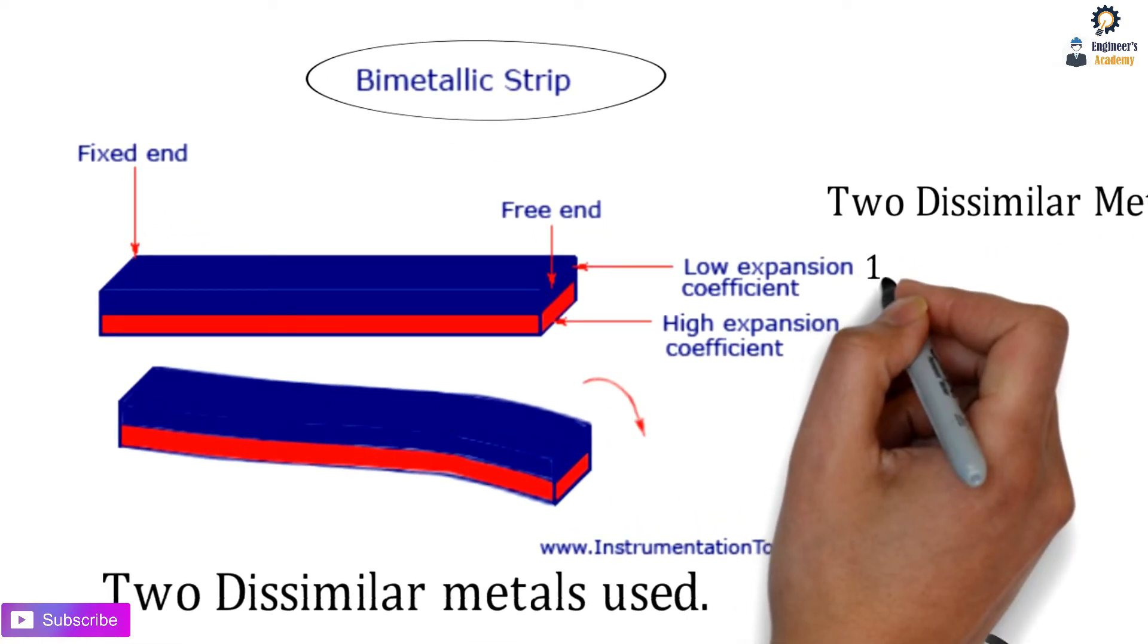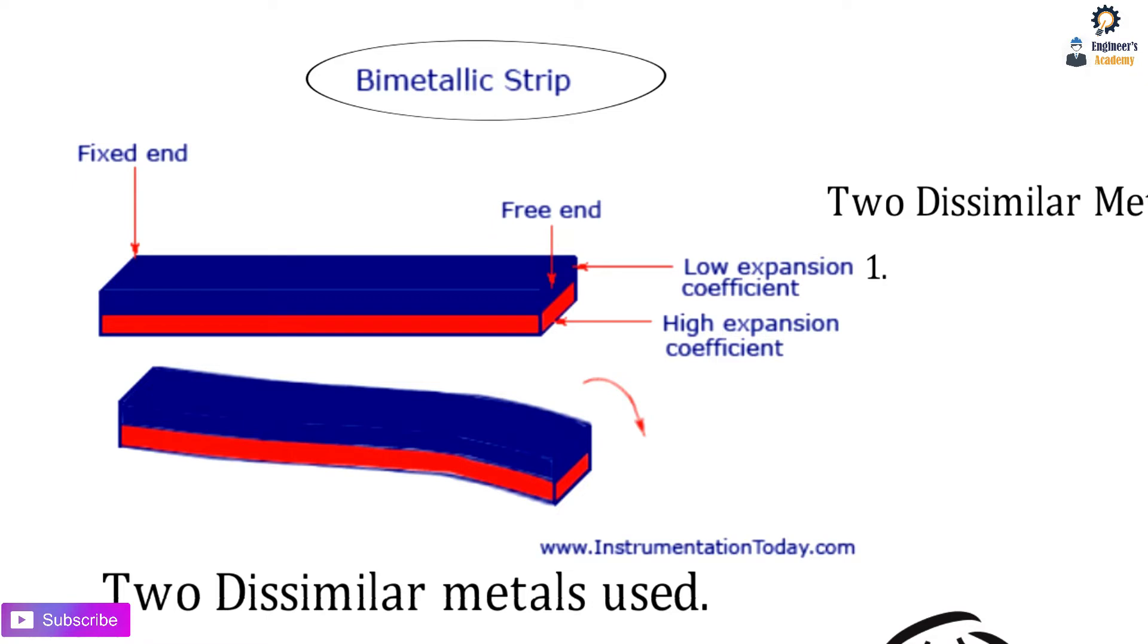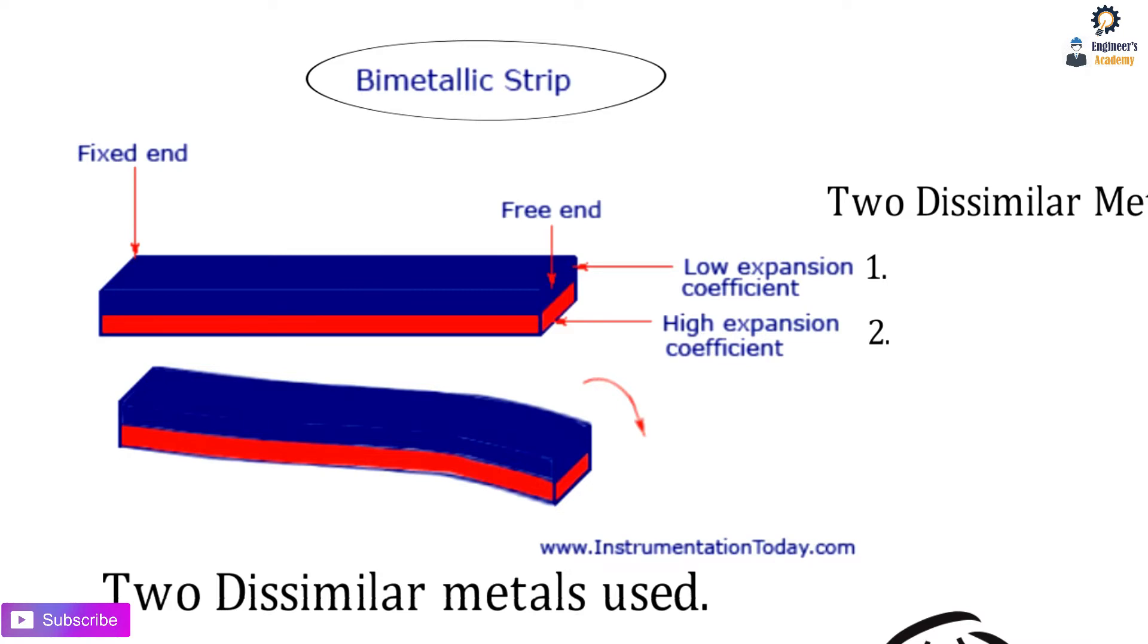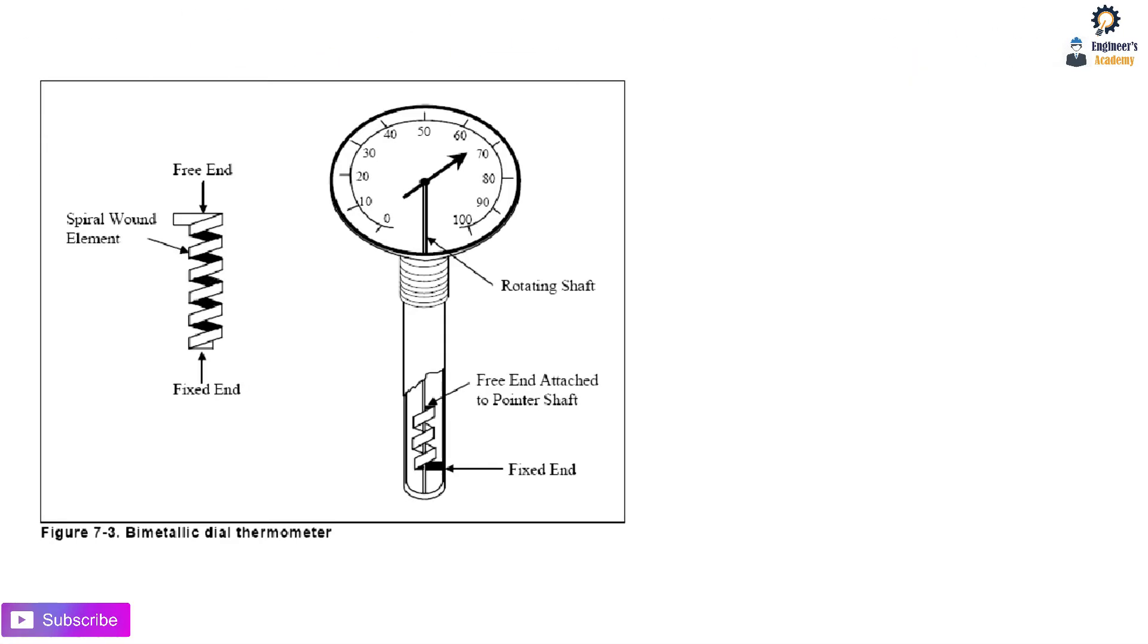That's why the bimetallic strip uses two different metals having low expansion coefficient and high thermal expansion coefficient. One metal is used for temperature going up, and the second is used for temperature going down. This is the industrial representation of how the gauge actually looks.